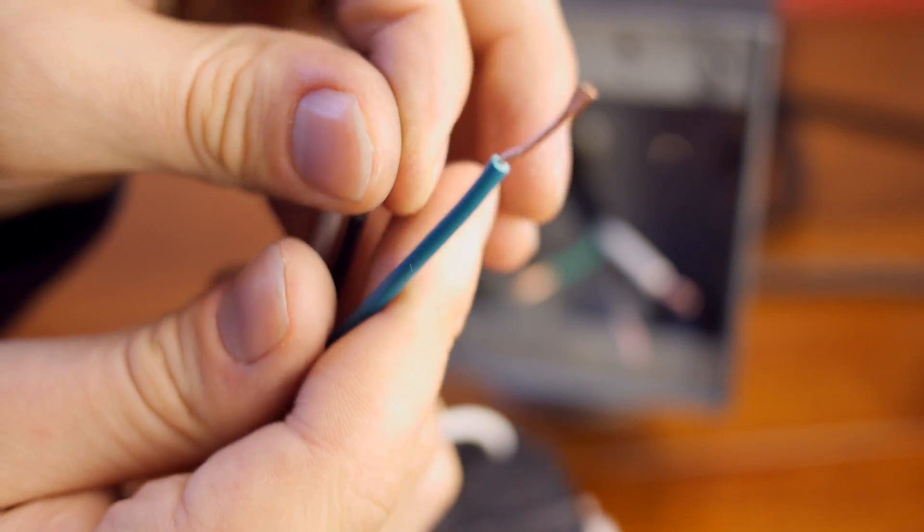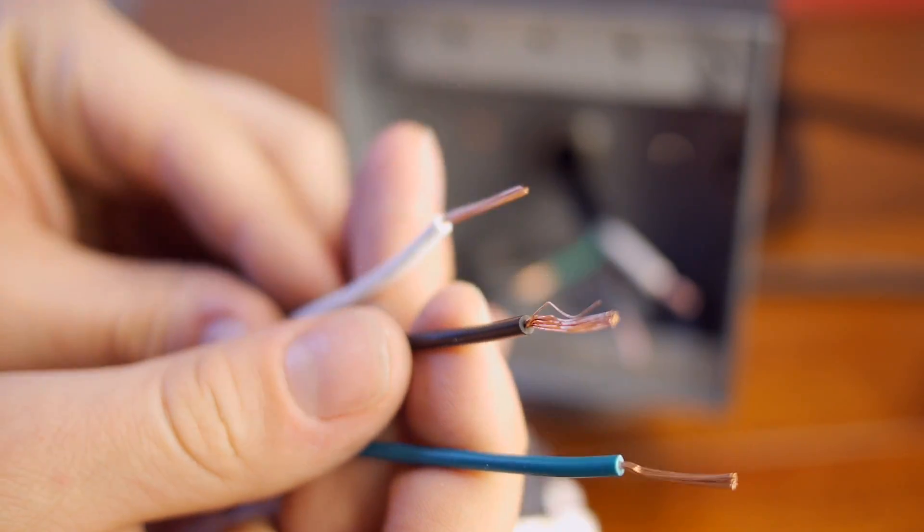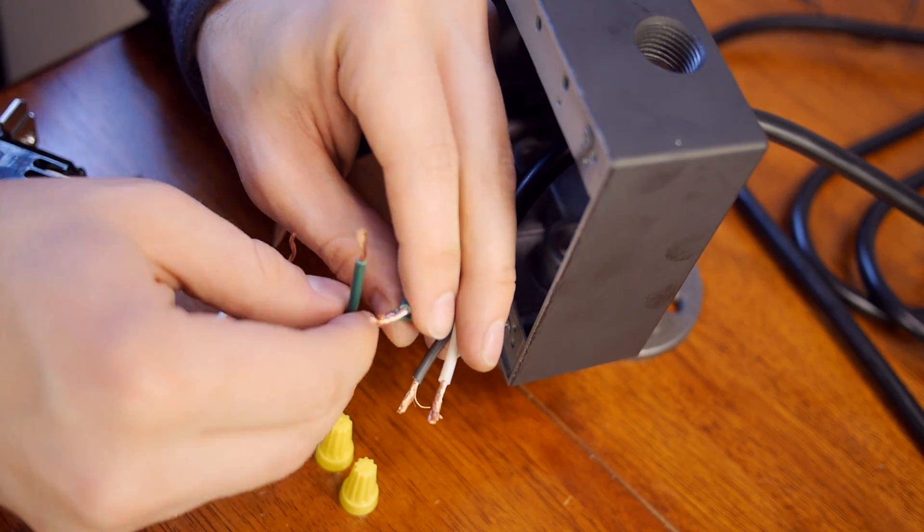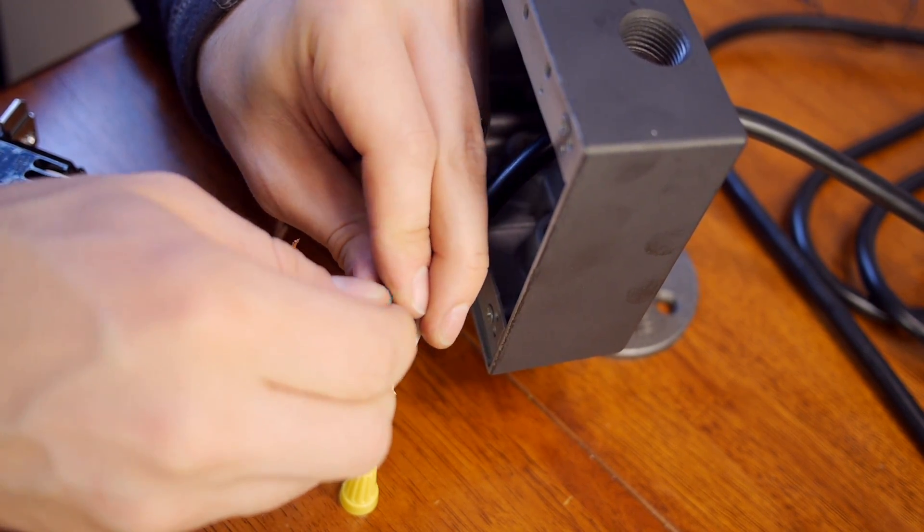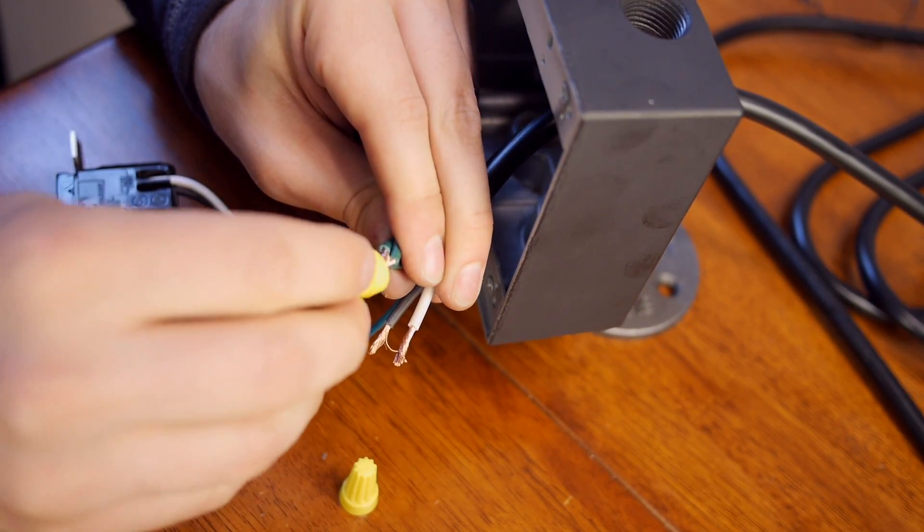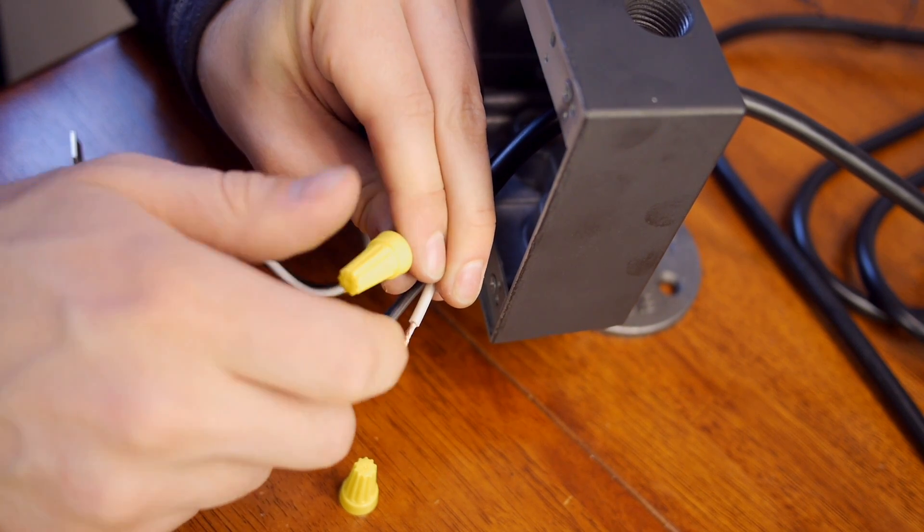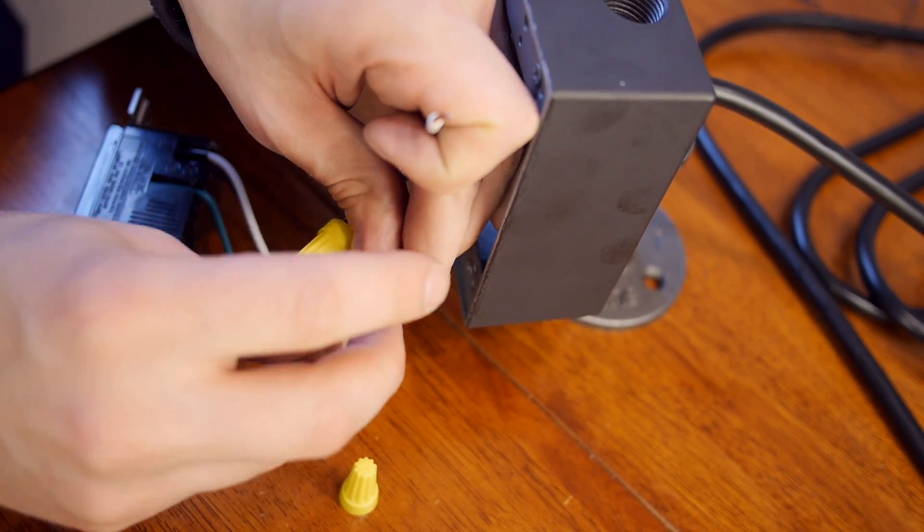The USB outlet does not require pigtails as it already has leads connected to it. I used yellow wire nuts to make the connections between wire, USB outlet leads, and pigtails for the second outlet. Green went on green, black on black, and white on white.